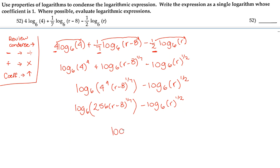So that's going to be log base 6. The first one is going to be our numerator and the second one is going to be our denominator. So that's going to be log base 6 of [256(r - 8)^(1/7)] all over r to the power of 1/2.